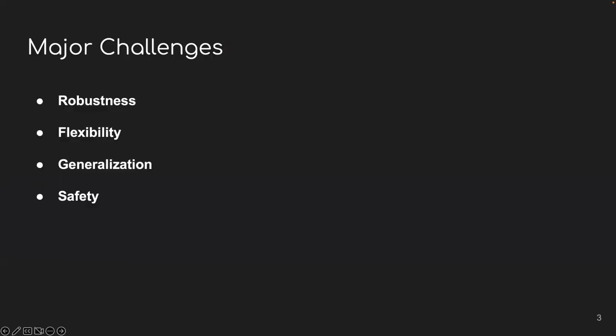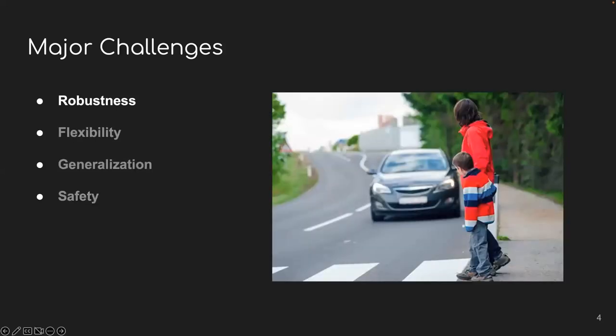In my opinion, there are quite a few key technical challenges we need to address. First of all, our world is inherently stochastic. For example, these pedestrians in this image, they may either wait for the car or just keep going. So this requires our autonomous driving system to be robust enough for all this stochasticity.